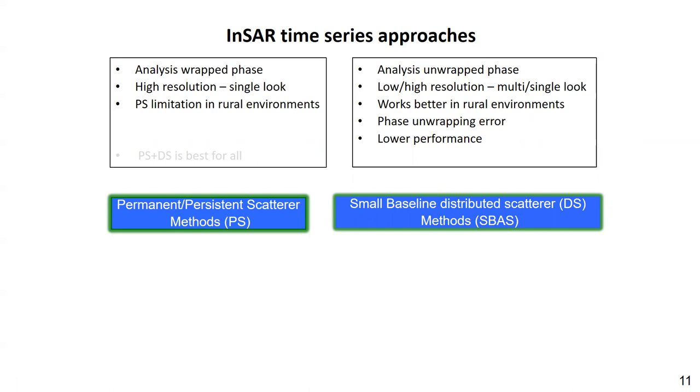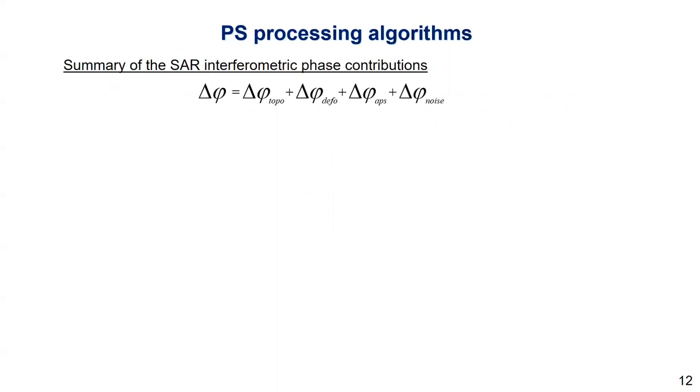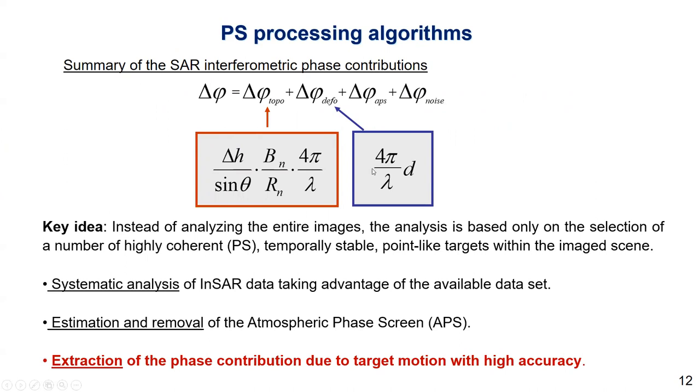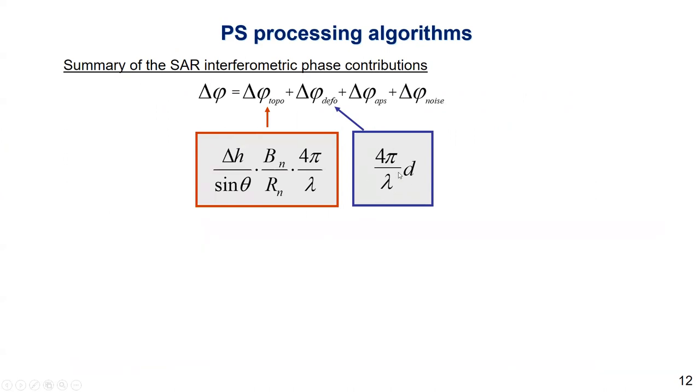And nowadays, in the literature or in the history, the PS InSAR is the first operator known InSAR technique for the time series analysis. So let's talk about it. The interferometric contributions have many components. They include the topographic phase, the deformation phase, and the atmospheric phase, which represents the signal delay due to the weather conditions and the noise. It is possible to remove the phase related to the topography, since we have the DEM elevation model information available. Our parameters are the deformation phase and the atmospheric phase.